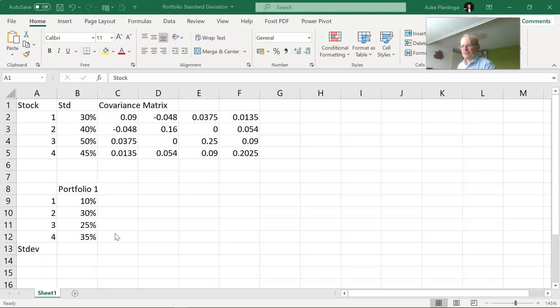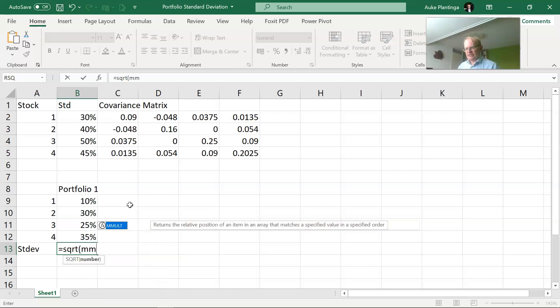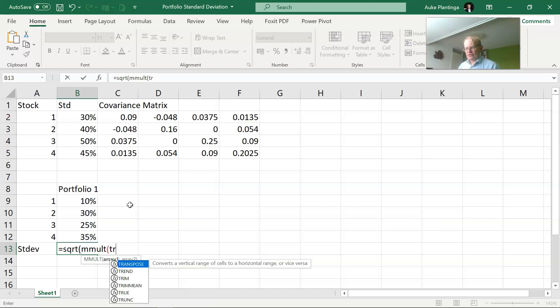Here I have an example of a covariance matrix for four different stocks and I also have a portfolio one here. That portfolio has 10% invested in stock one, 30% in stock two, 25% in stock three and 35% in stock four. Now I want to calculate the standard deviation of this portfolio. I need to start with a row vector and for that reason I start with the transpose of this vector. Essentially I change a column vector into a row vector.